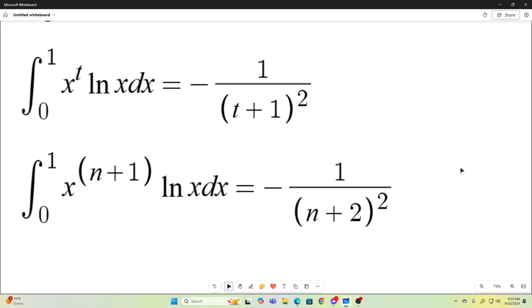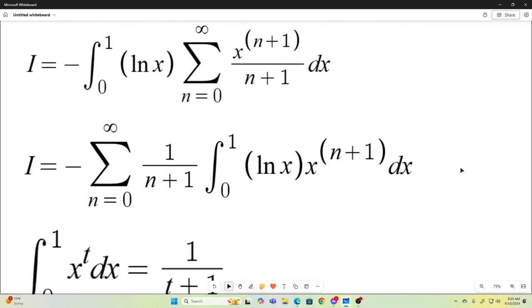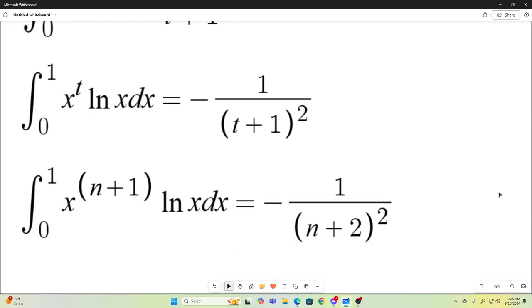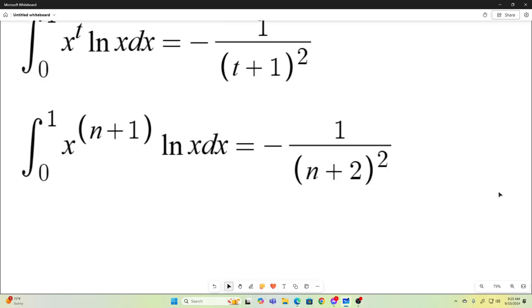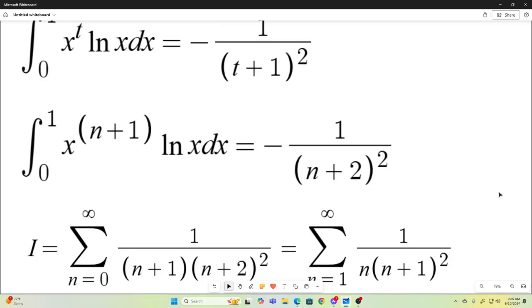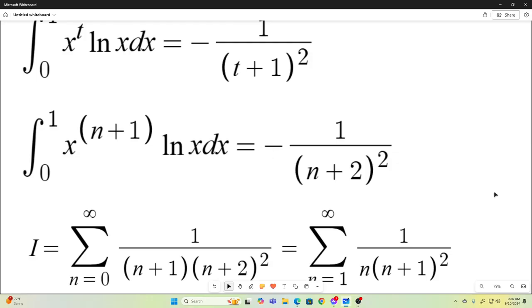So, now we can replace this part right here with negative 1 over n plus 2 all squared. Our integral transforms into this.